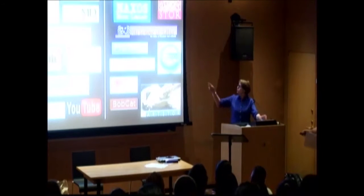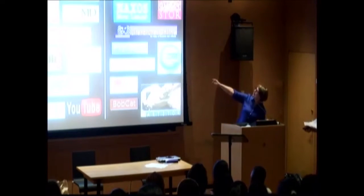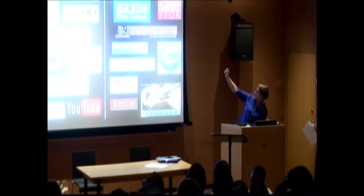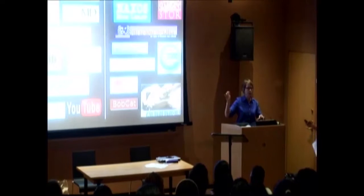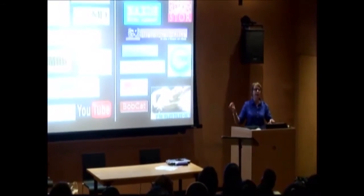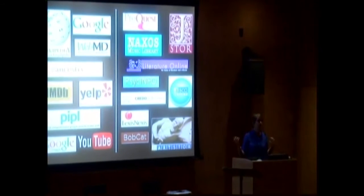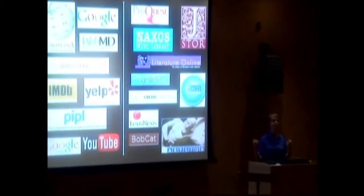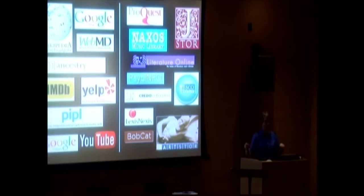Some of these databases — like PsychInfo, JSTOR, LexisNexis — are the kinds of search tools that only an academic library can provide. New York Public Library provides some of them too. Because they're very expensive — it's not just like Google, where anybody can just walk up to that search engine and type in. These are things that libraries typically subscribe to.